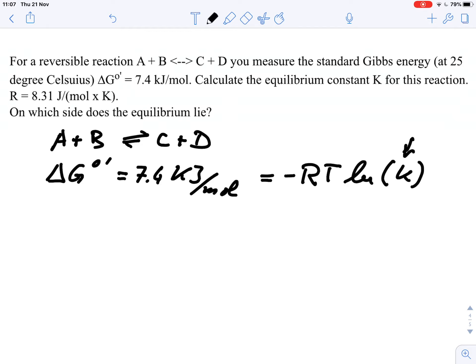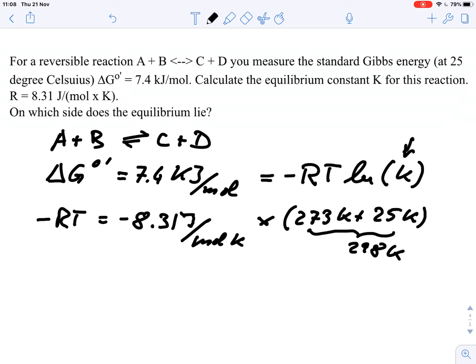So what we need to do really is to solve this equation. And we know that minus RT is negative 8.3 joule per mole and Kelvin. And our temperature is 273 Kelvin plus 25 Kelvin. So this gives us 298 Kelvin.